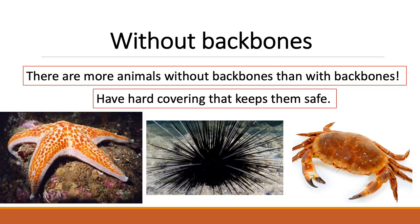The second group is animals without backbones. There are many kinds of animals that have no backbones, and they also have parts that help them get what they need. There are more animals without backbones than with backbones. Some animals without backbones have a hard covering that keeps them safe.